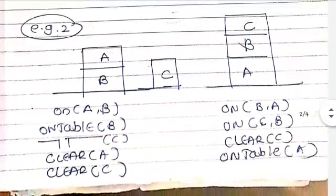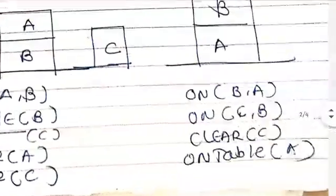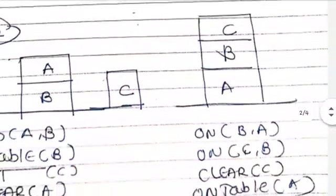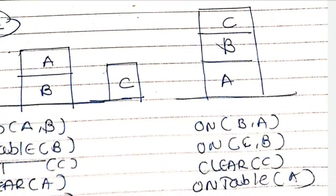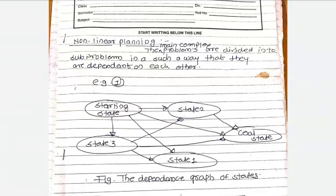Let's review this. Our initial predicates are: A is on B, B on table, C on table, A is clear, and C is clear. Our goal predicates are: B is on A; if B on A is satisfied, then and only then C on B is satisfied; clear C is satisfied; and A is on table. In this way, we discussed the concepts related to non-linear planning. The main complex problem is divided into sub-problems in such a way that the sub-problem tasks are dependent on each other.